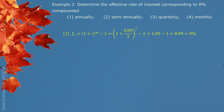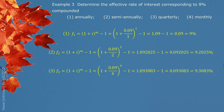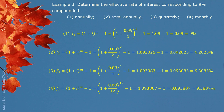Even if we plug into the formula, we get the same answer. For 9% compounded semiannually, the effective interest rate is 9.2025%. For 9% compounded quarterly, the effective interest rate is 9.3083%. For 9% compounded monthly, the effective interest rate is 9.3807%. We can clearly see that the effective interest rate increases little by little as the compounding frequency increases.